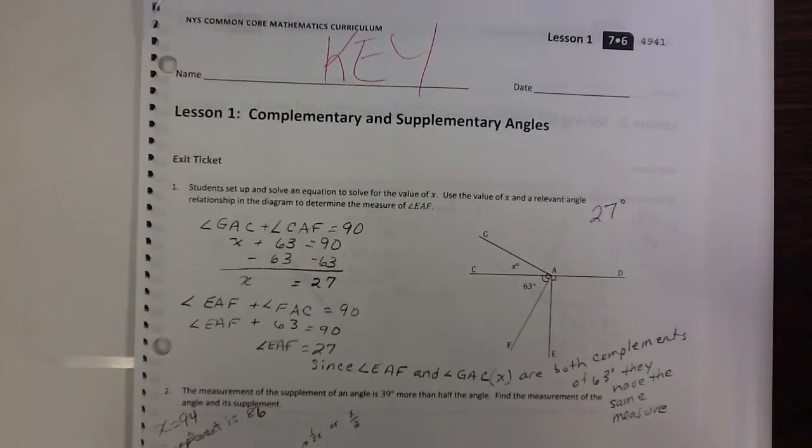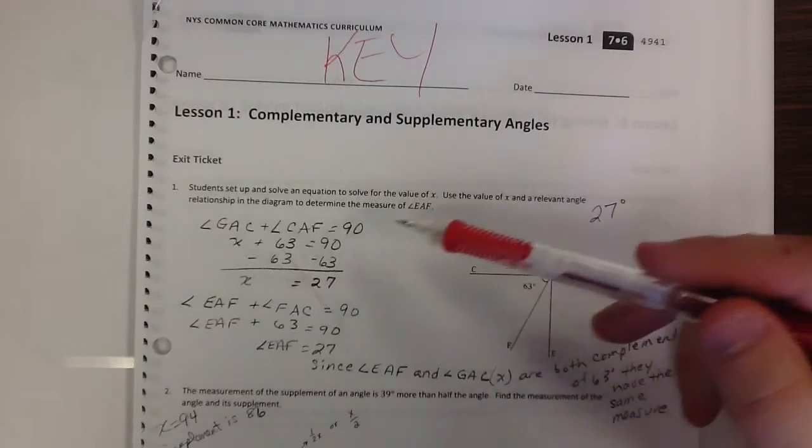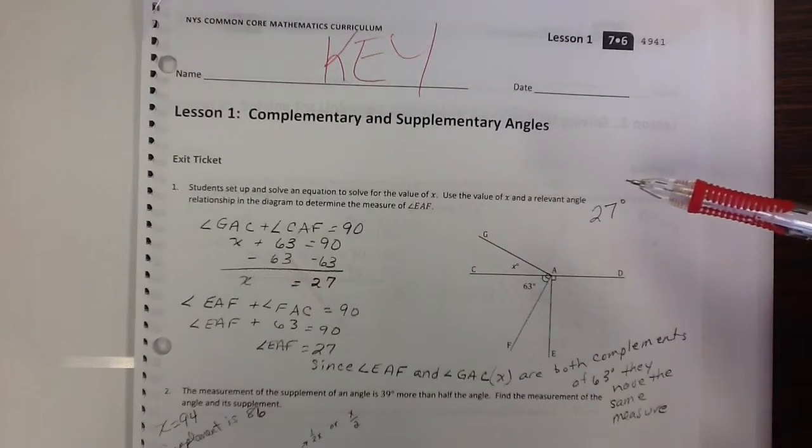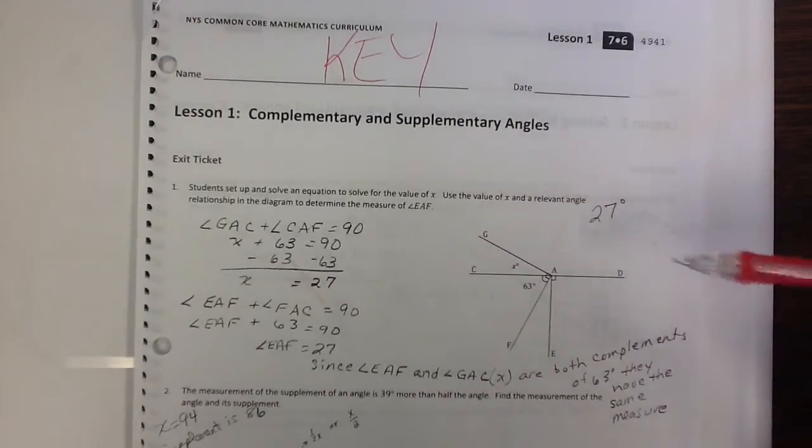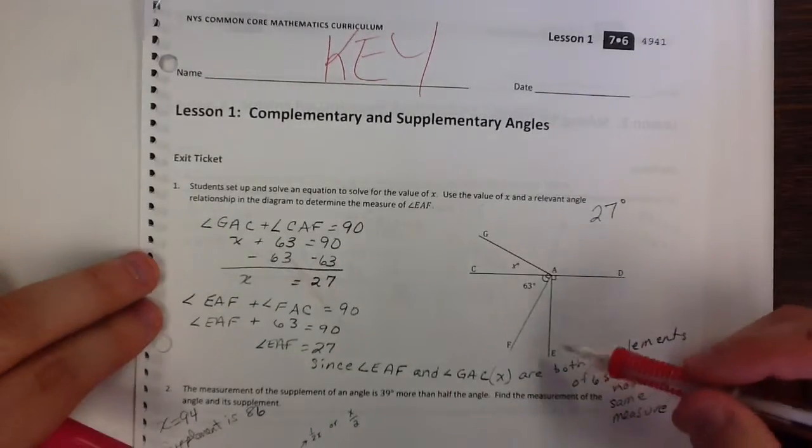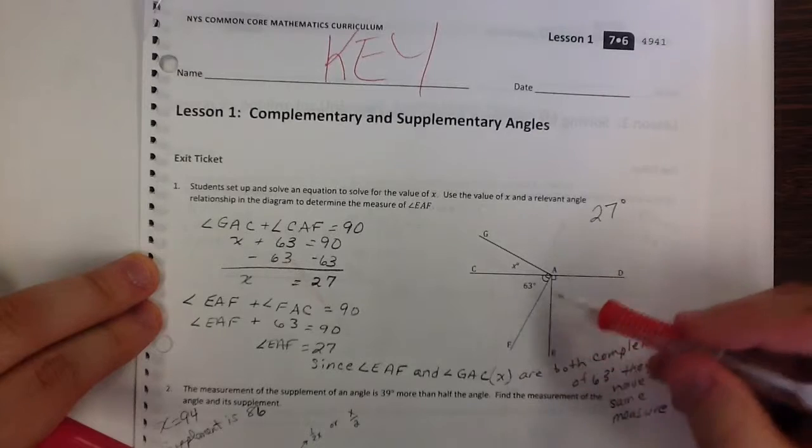So I'll just explain through how I got the answer here. So number 1 says students set up and solve an equation to solve for the value of X. Use the value of X and a relevant angle relationship in the diagram to determine the measure of angle EAF, okay? EAF is boom, boom, boom, okay?